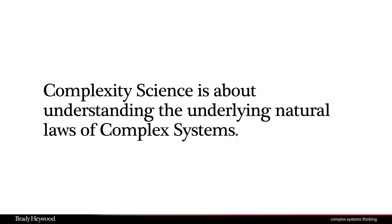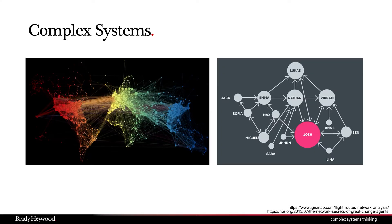I think this is interesting because it tells us that across this diverse range of systems there are some commonalities. One of them in these complex systems is this power law relationship. And this is what complexity science really is all about — understanding the underlying natural laws of complex systems. It's saying, regardless of which branch of science the system exists in, is there a common underlying natural law governing these systems? And it turns out when we get to complex systems, there is.